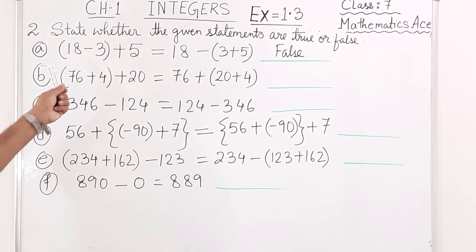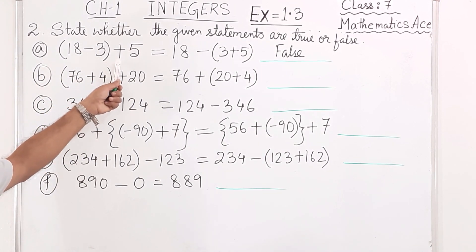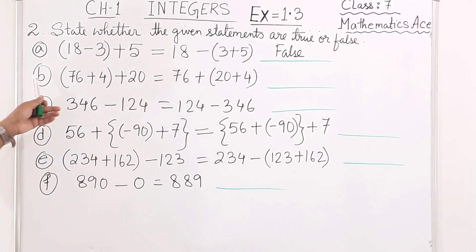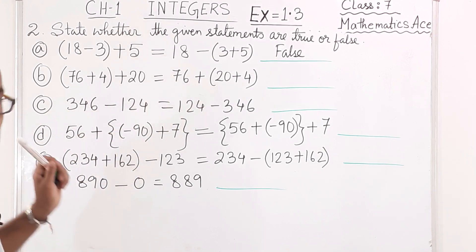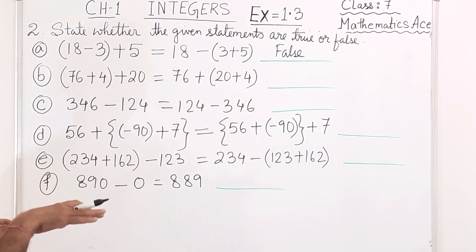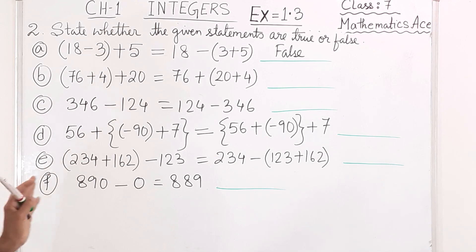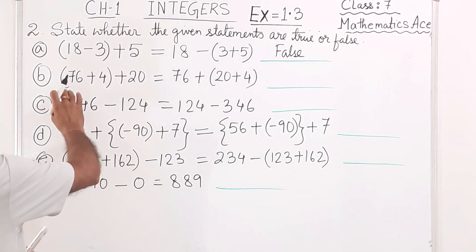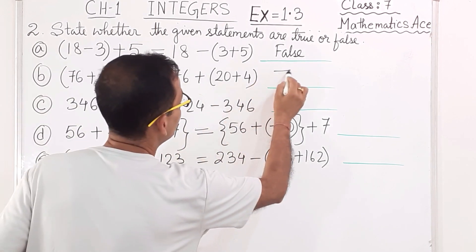Because the order is changed, one positive addition is becoming a subtraction, so it's false. Now number B: you can see all plus signs — that means it's the associative property of addition. If you change the order, both sides will be the same. So we write: True.